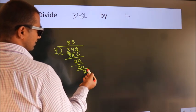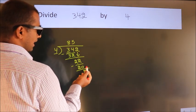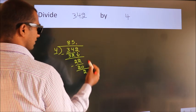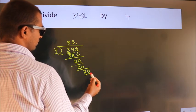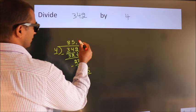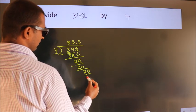After this, no more numbers to bring down. So what we do is put a dot and take 0, giving us 20. When do we get 20 in the 4 table? 4 fives, 20.